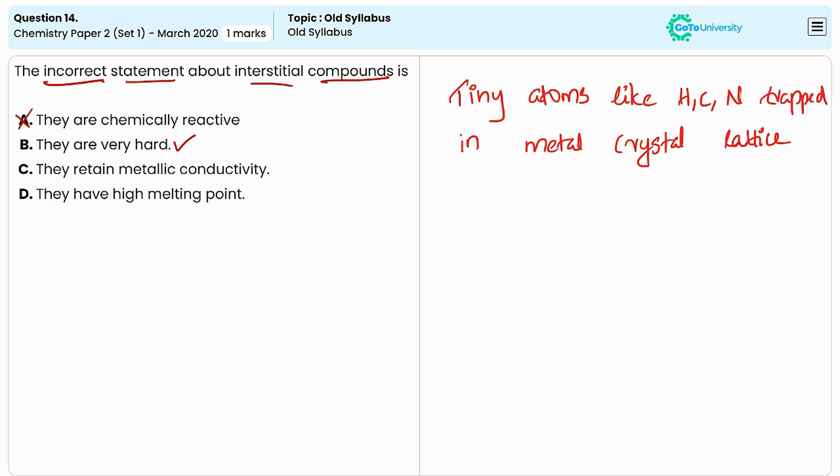The third one is they retain metallic conductivity. This is also correct. And the last one is they have high melting point. This is a correct statement because the interaction between the atoms will be strong. So the correct answer is option A.